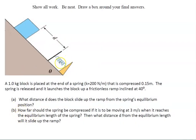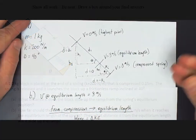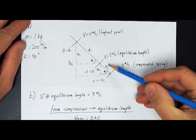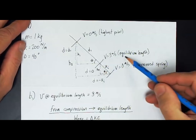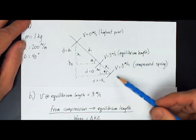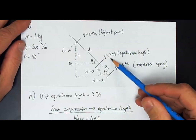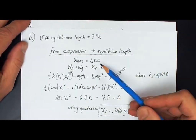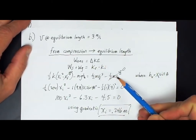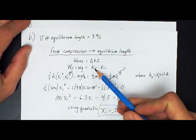The second part of the question asks: how far should we compress the spring so that when the block leaves the spring it is traveling at 3 meters per second? And then, knowing it leaves at 3 m/s, how far up the ramp does it go? We're now compressing the spring a different amount — not 15 centimeters. The block starts at 0 m/s and ends at 3 m/s at the equilibrium position, so the change in kinetic energy is no longer zero.